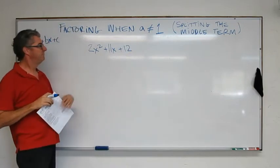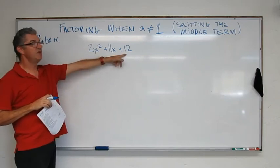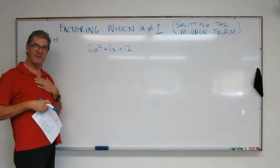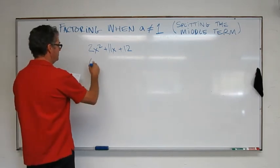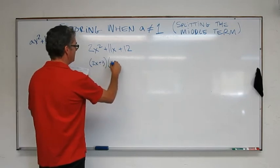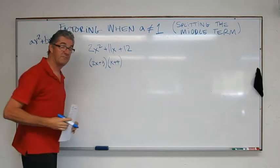Okay. First example. 2x squared plus 11x plus 12. Give that a shot. See how you do. Okay. The answer for this one is just 2x plus 3 times x plus 4. Okay.